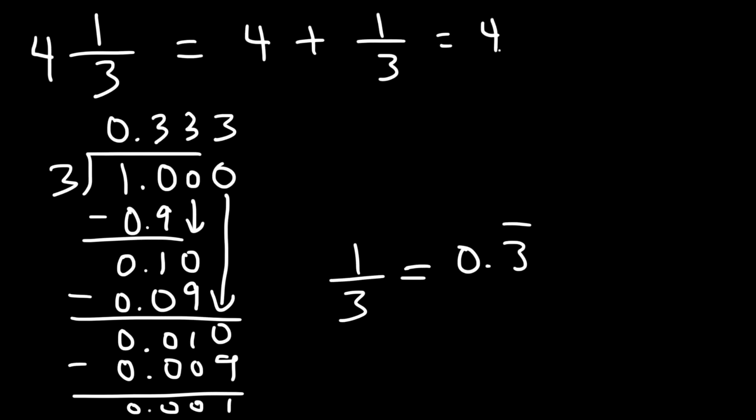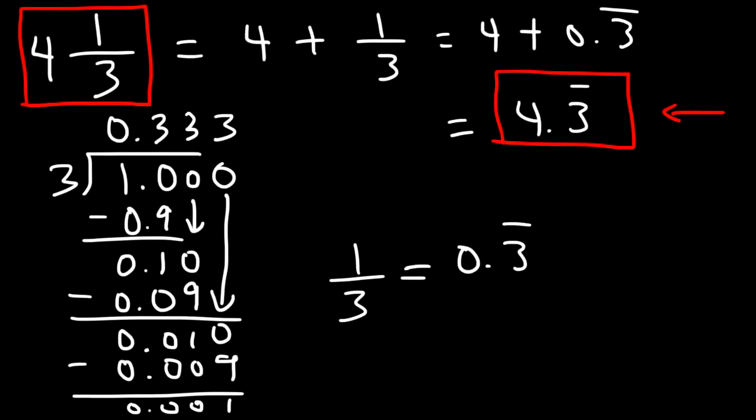So this is going to be 4 plus 0.3 repeating or 4.3 repeating. And so that is the value of 4 and 1 third. It's 4.3 repeating. That's it.